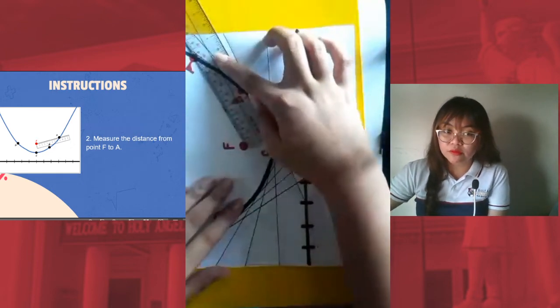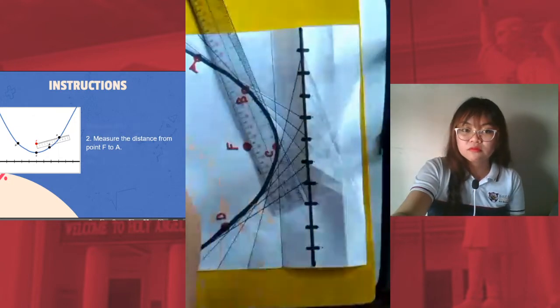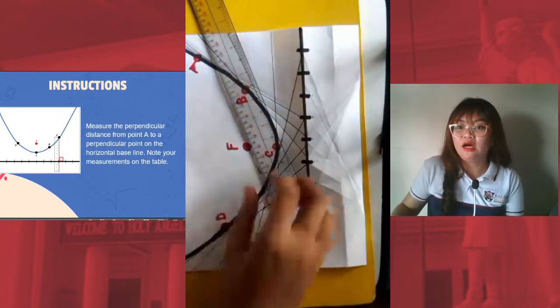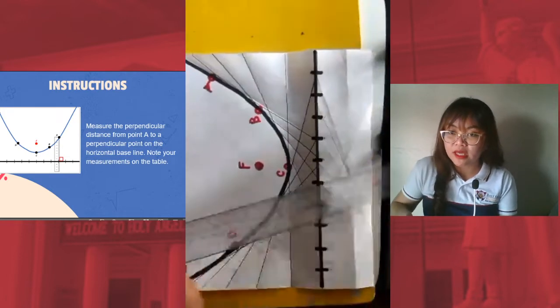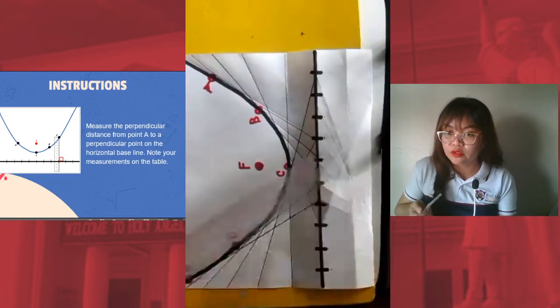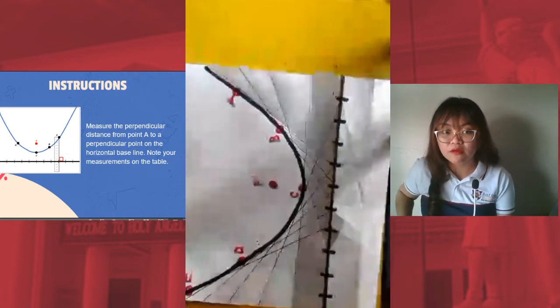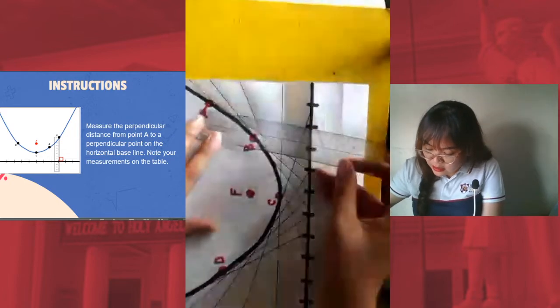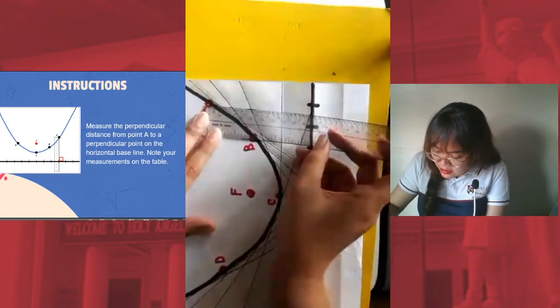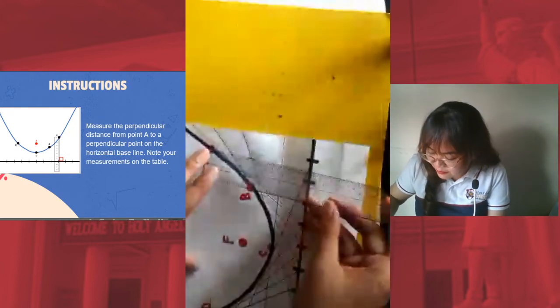So I've got the measurement from point F to A already. Next, what do I have to do? Measure the perpendicular distance from point A to the base. Okay, so from point A now, from point A to the base, like this. How you like that? Okay.